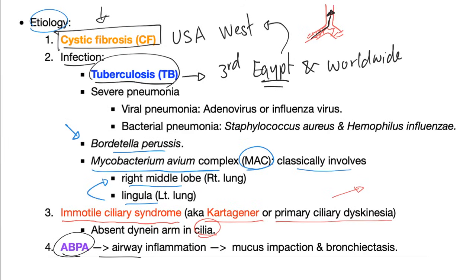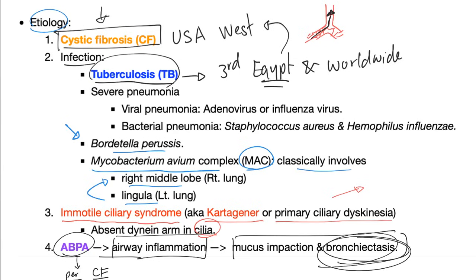Allergic bronchopulmonary aspergillosis: this is a patient with persistent asthma or cystic fibrosis not responding to treatment, leading to airway inflammation, mucus infection, which can end up with bronchiectasis.